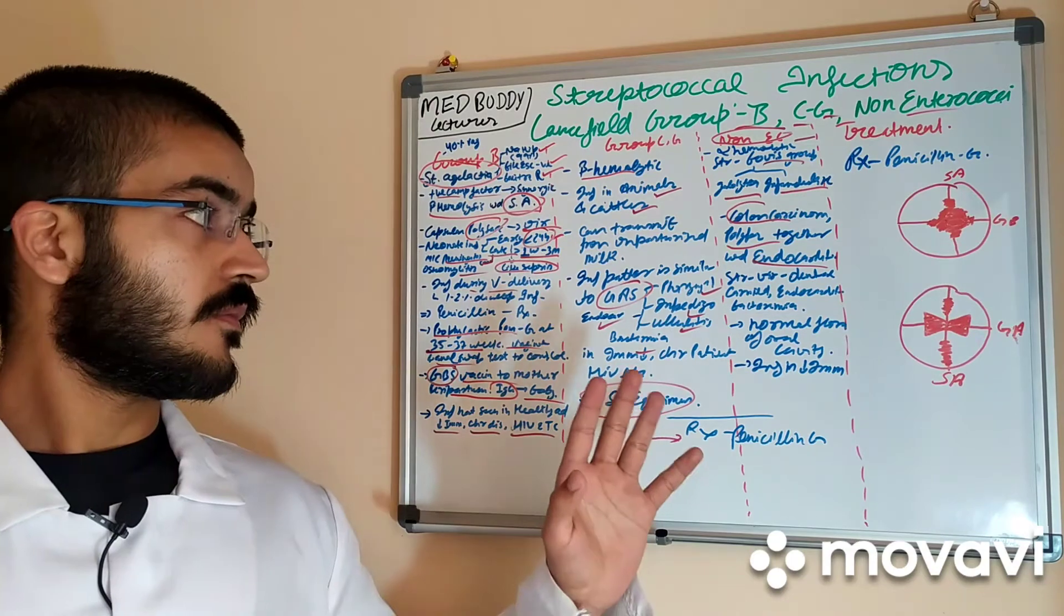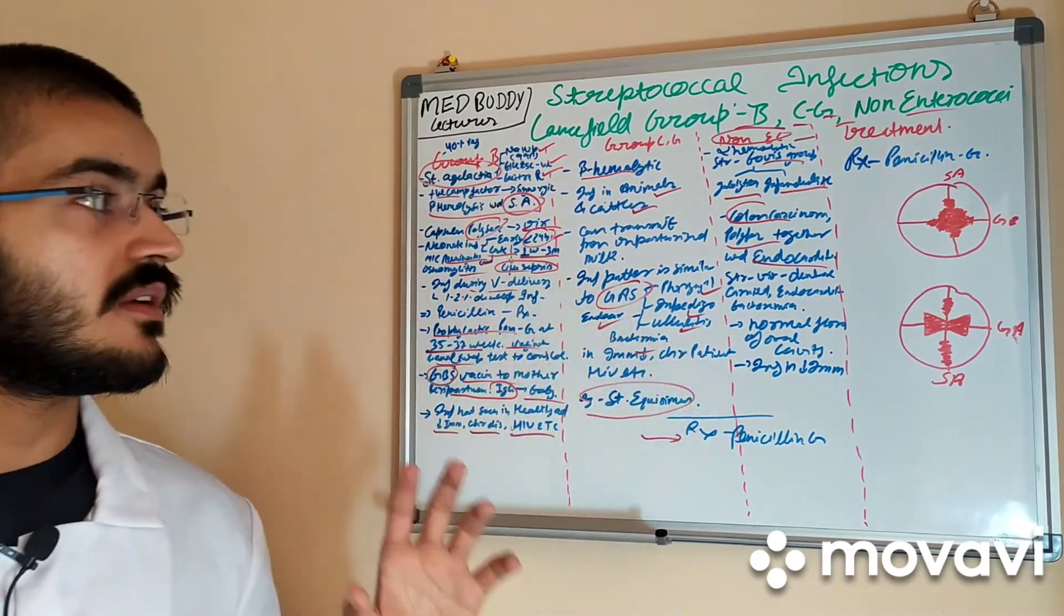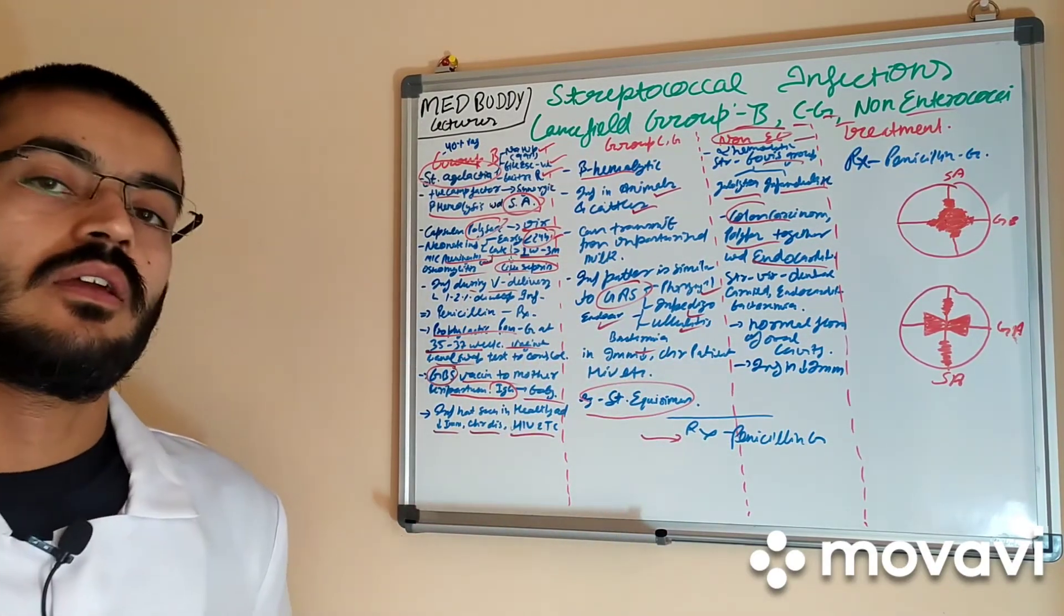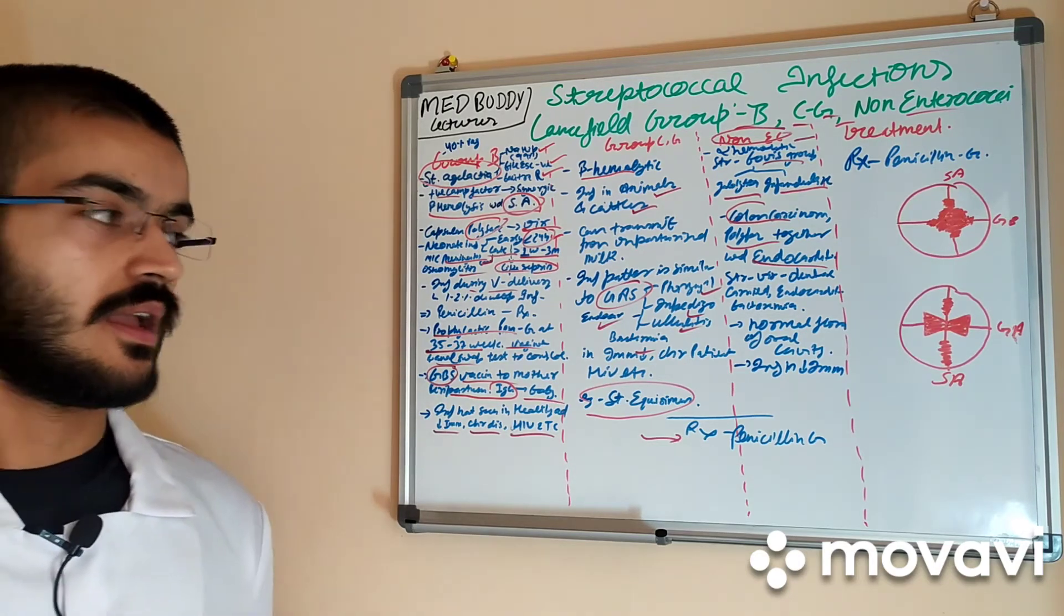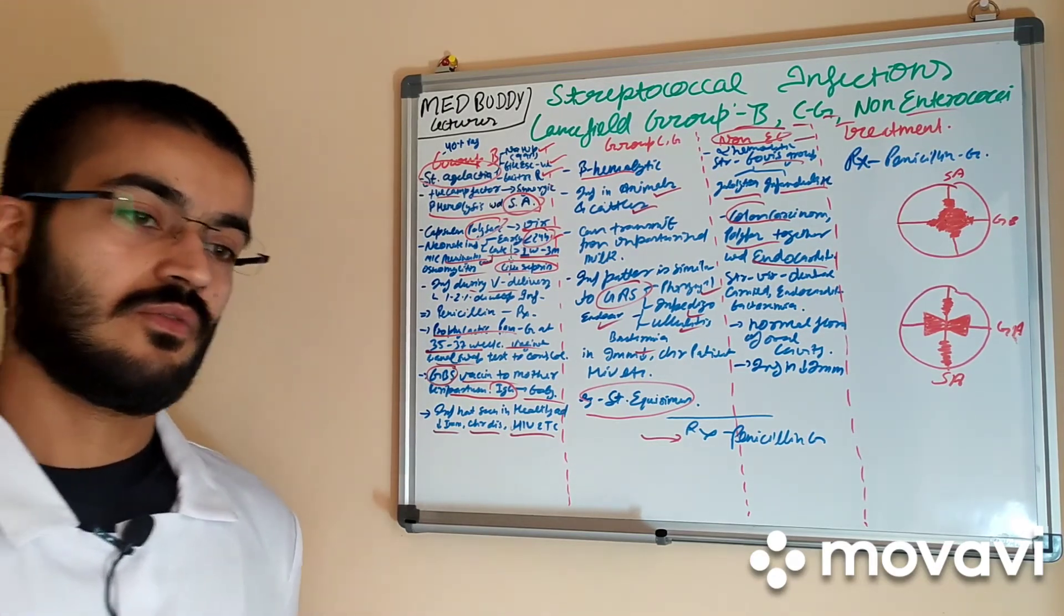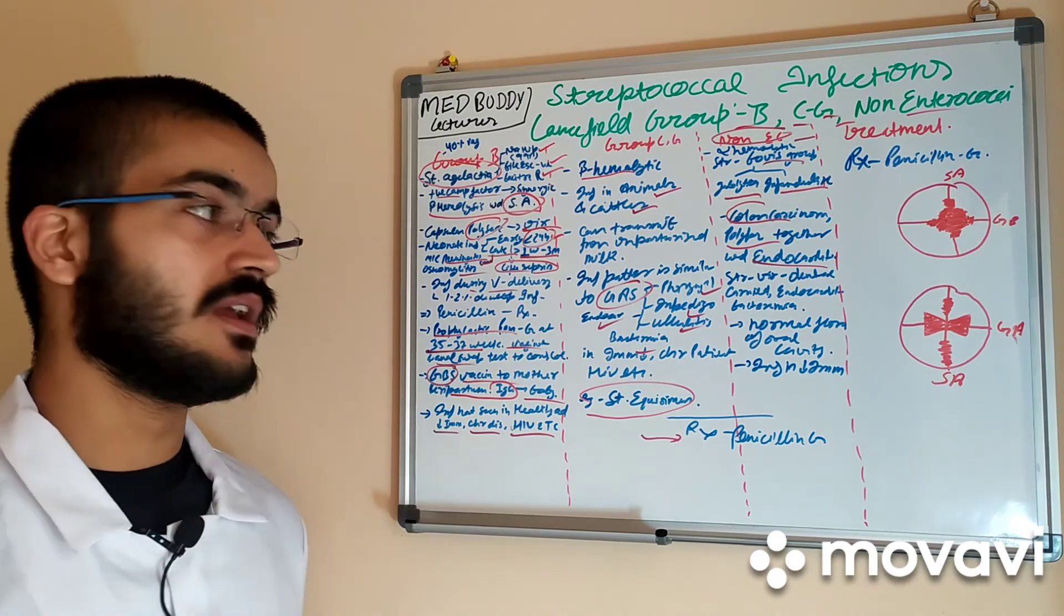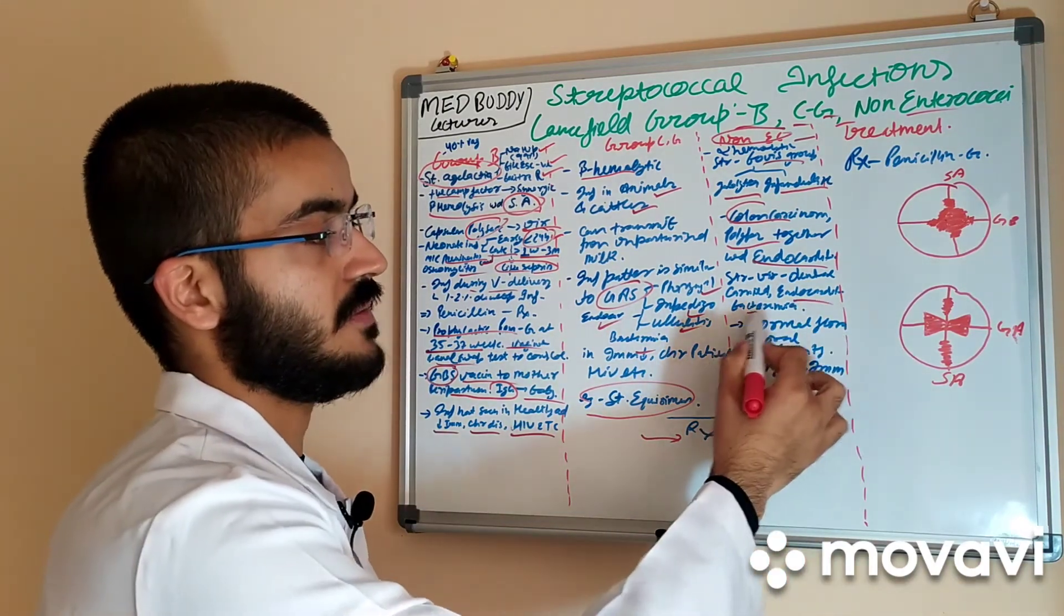These are responsible for colon carcinoma and polyps together with endocarditis. They form normal flora of oral cavity and vigorous brushing, flossing when lead to bleeding can be a reason of endocarditis and bacteremia.